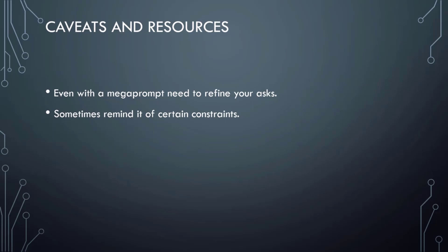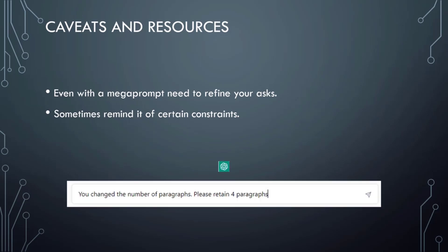Even with a mega prompt, you will likely need to refine your ask or remind it of certain constraints. For example, in the first version of that prompt I told it to write in paragraph form and so it literally gave me a single paragraph. I revised it to instead say do not change the number of paragraphs, yet in asking for several responses, sometimes it did change the number of paragraphs. I simply corrected its mistake by saying you changed the number of paragraphs from four to three, please retain four paragraphs — and it repeated the response with the correct number.